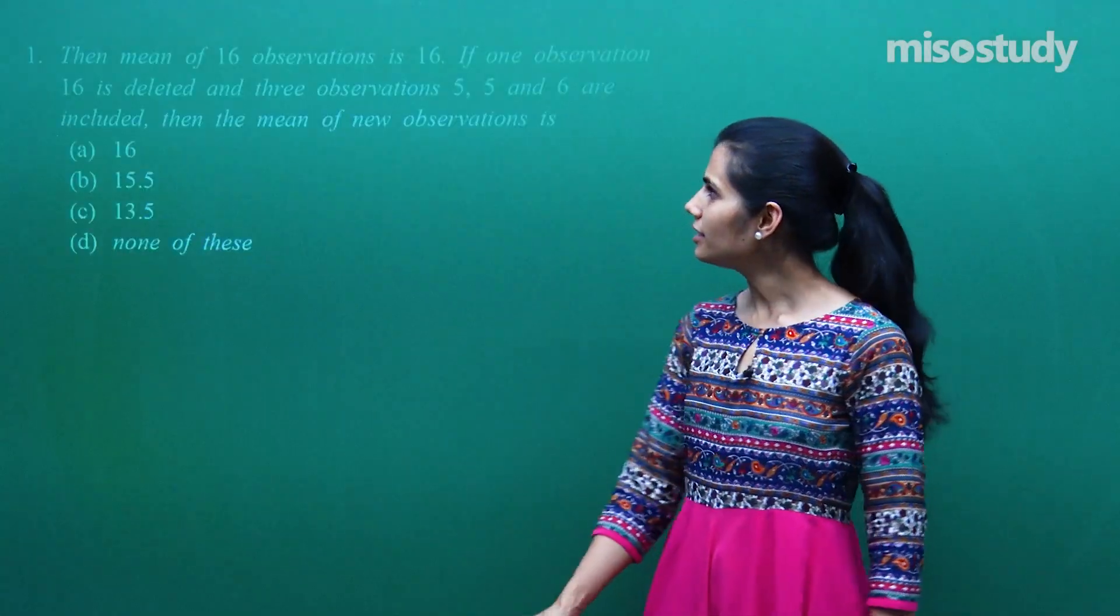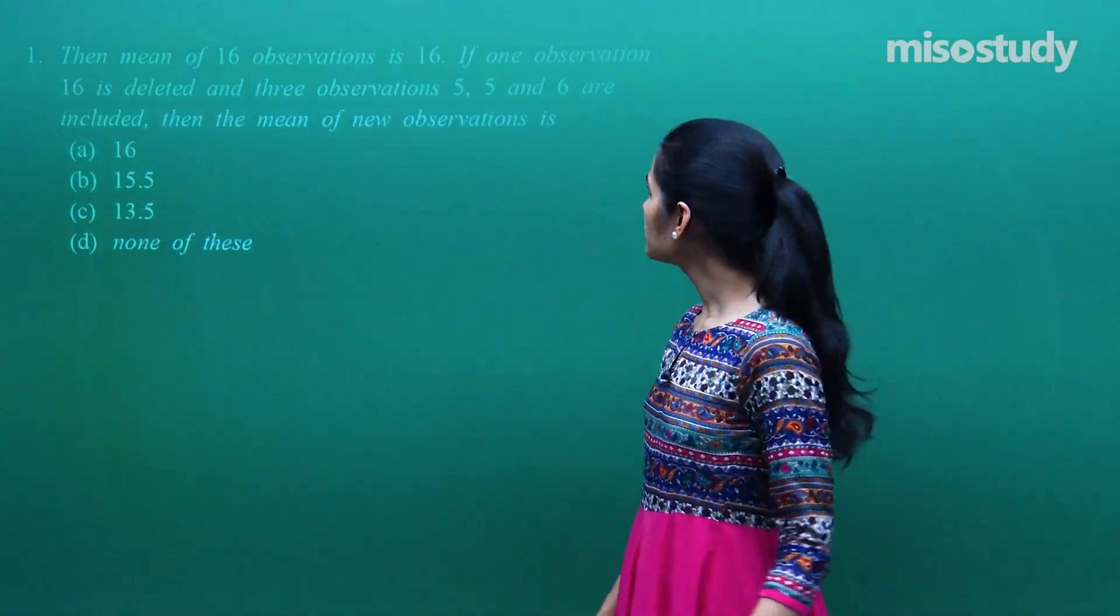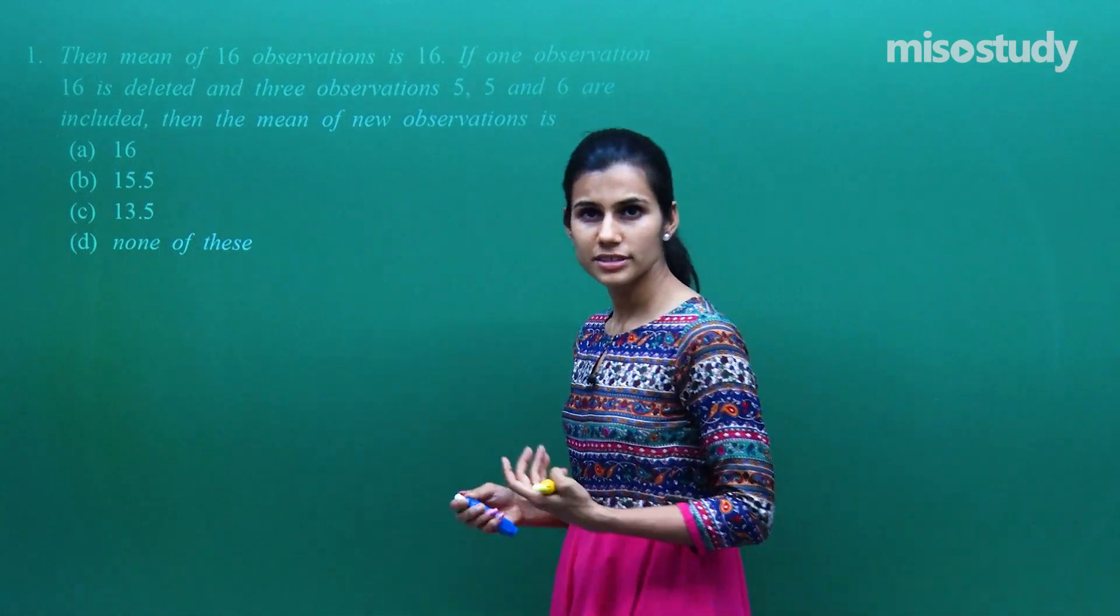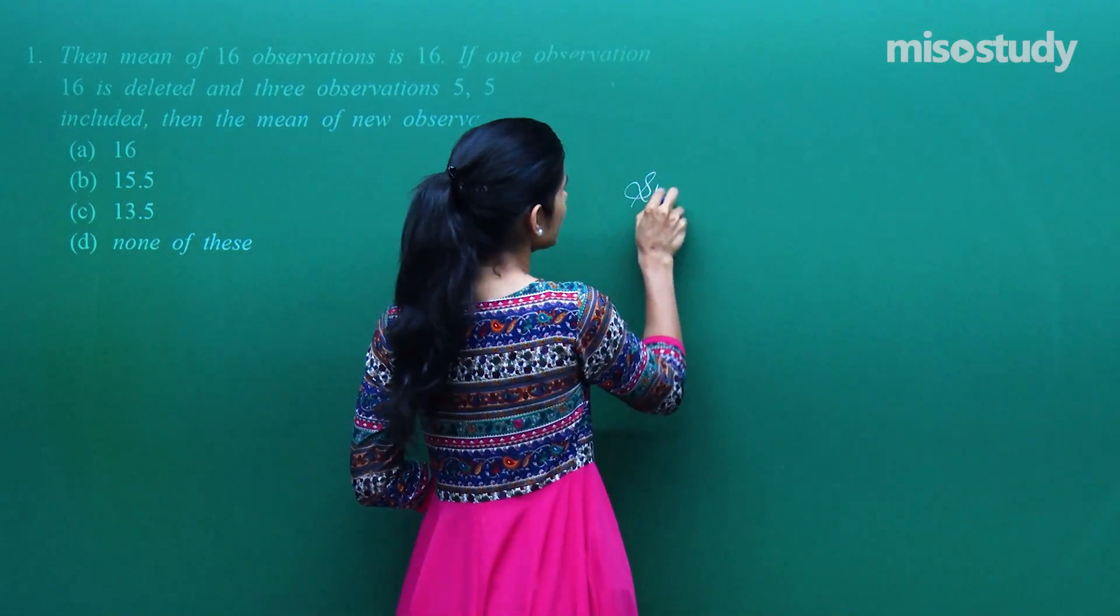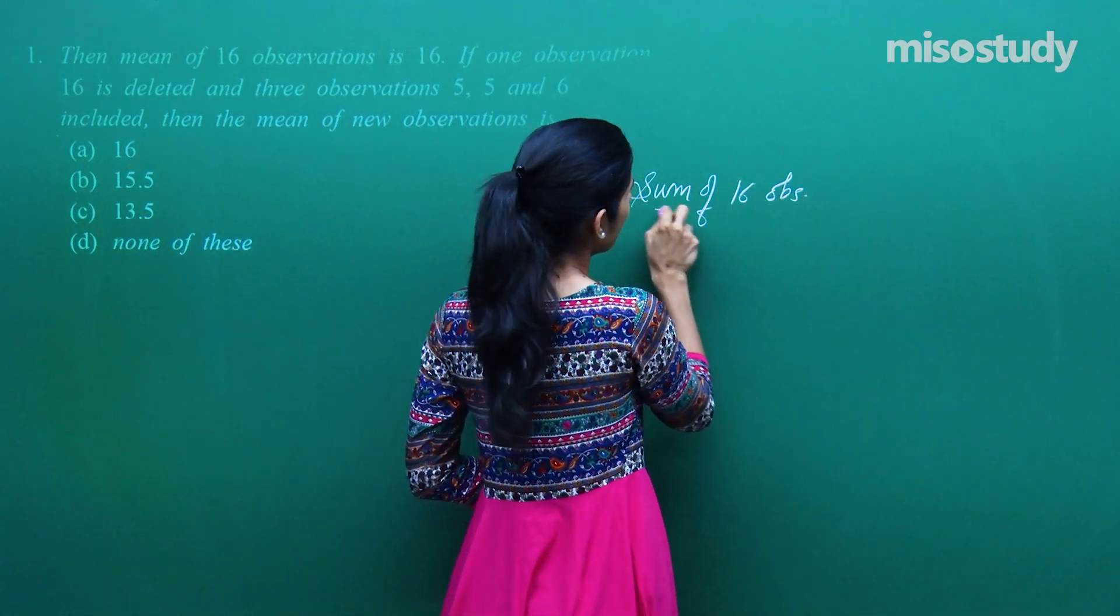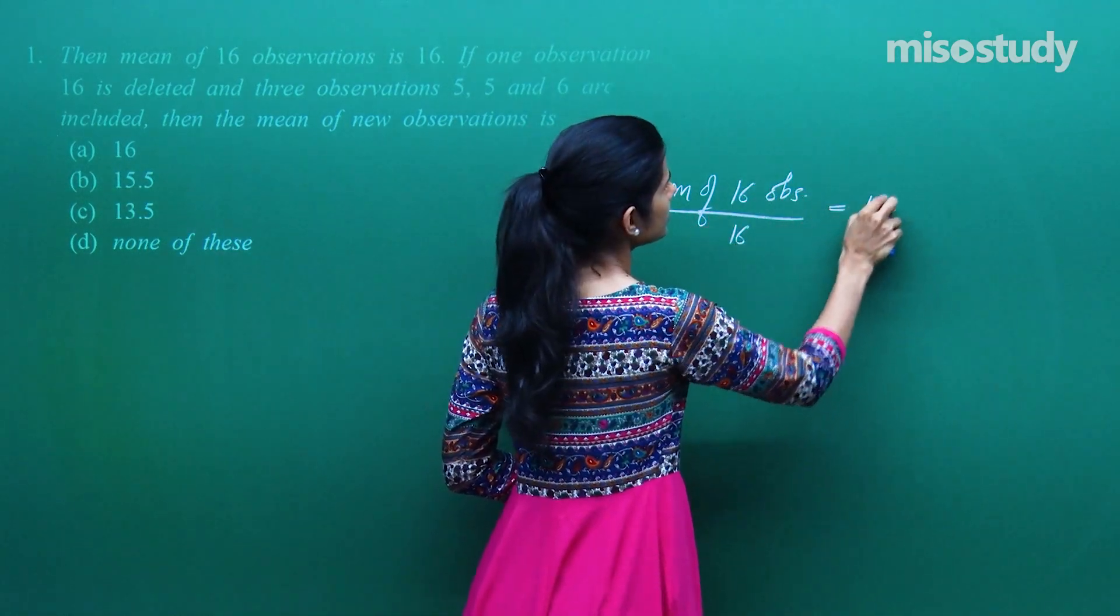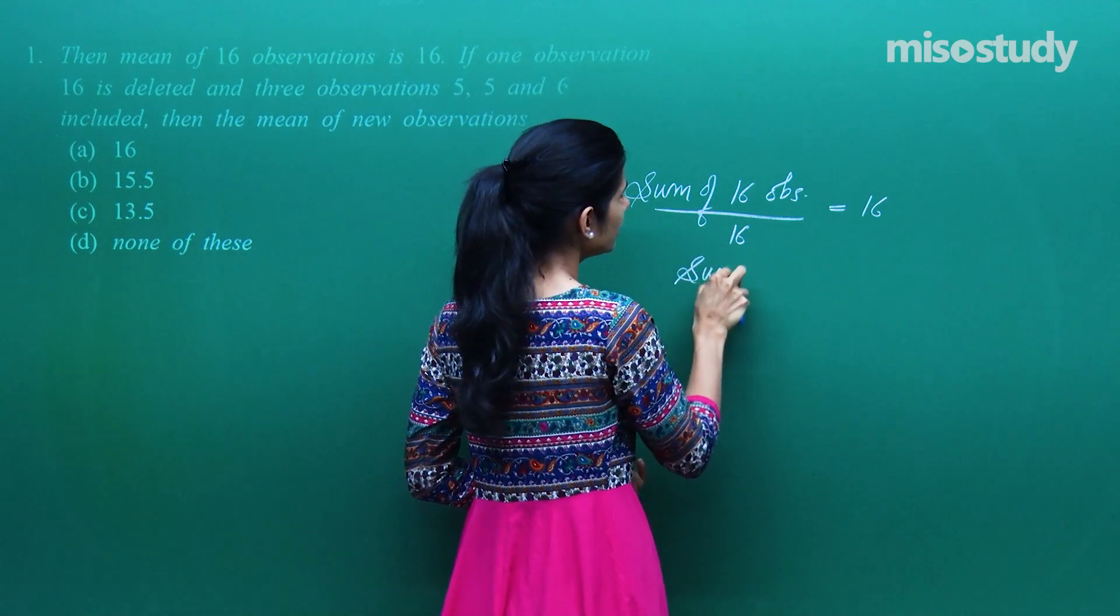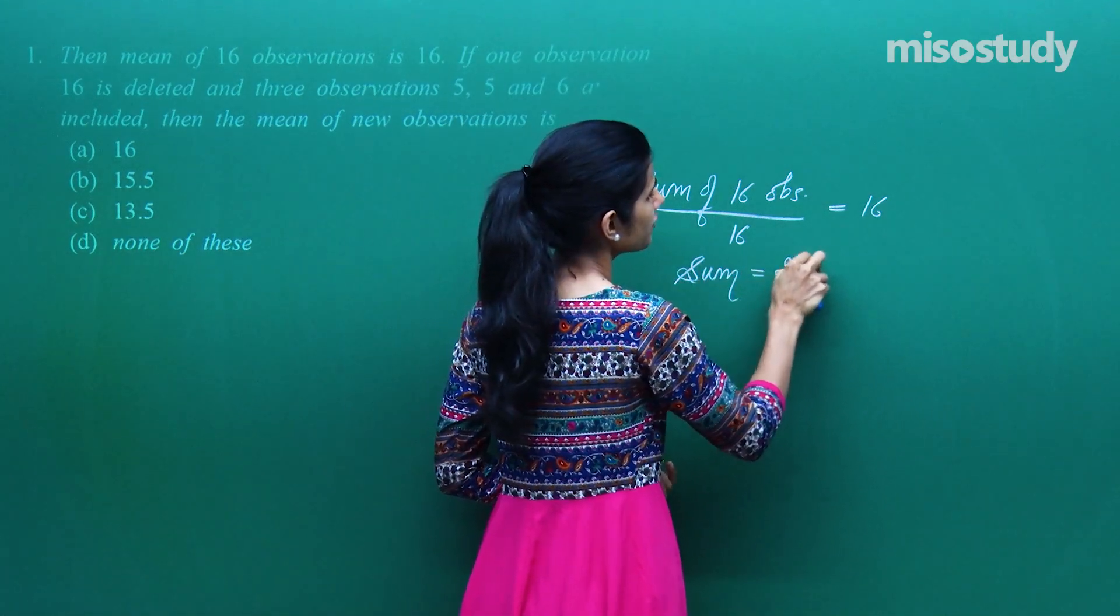Okay everybody, let's take the first question. The mean of 16 observations is 16. Sum of 16 observations upon 16 is 16. What is the sum? 16 into 16 is 256.